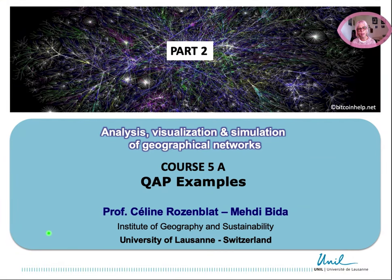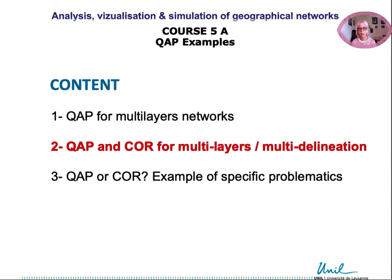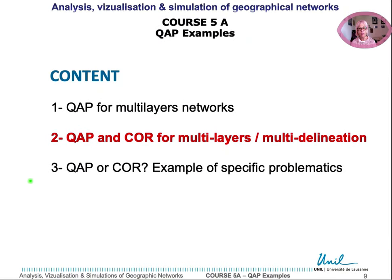To continue to explain the usefulness of crop correlation, I will present a second example. In this example, we searched the correlation between air and sea networks of cities at the world scale, evaluating the delineation of port city which would maximize this correlation.